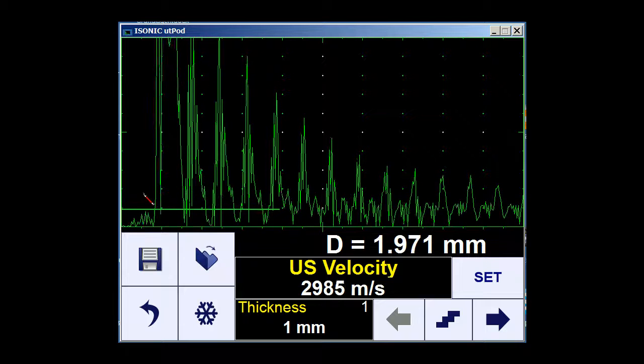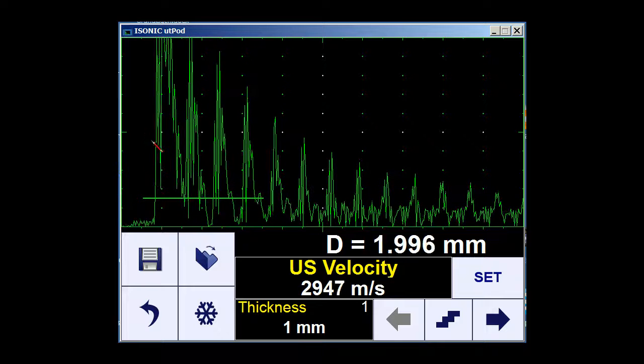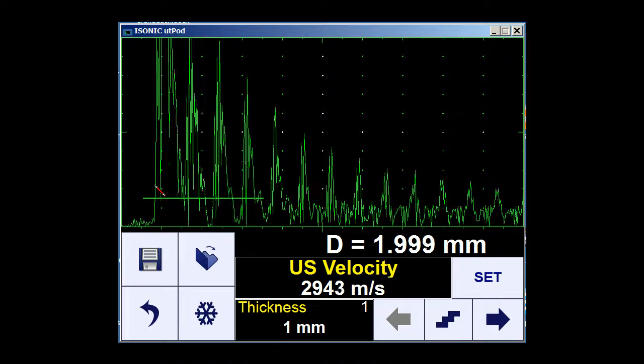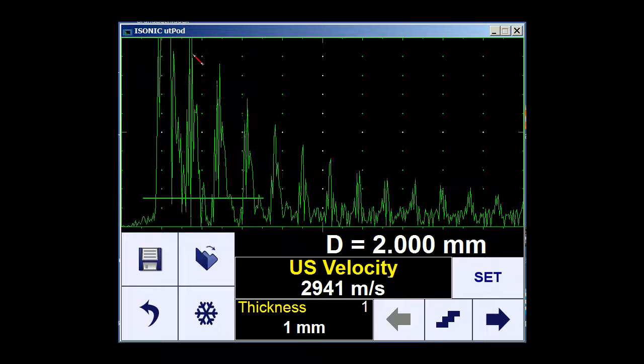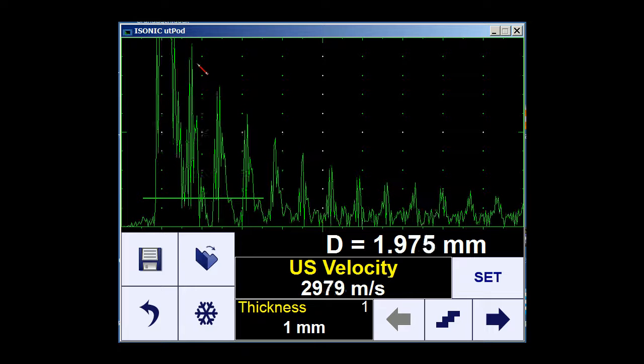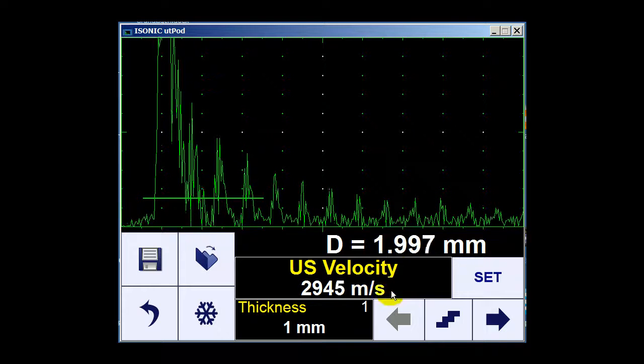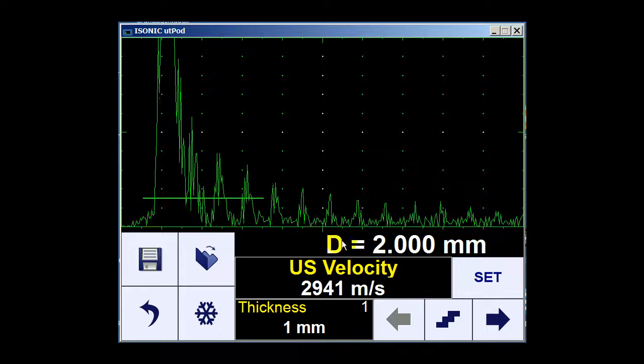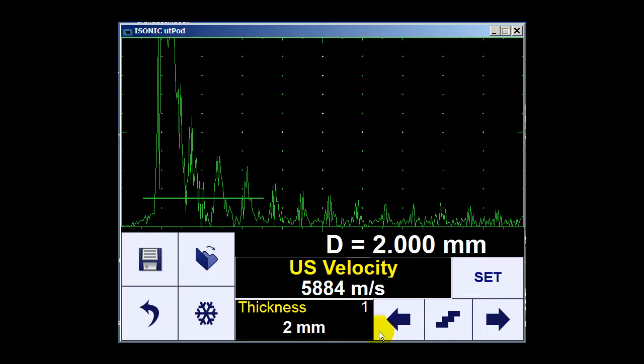I define my gate. The gate has to cover the delay line echo and at least one echo from the backwall of the test piece. Now it shows some sound velocity which is of course wrong and some thickness measurement. I am coupled on a 2mm block, so I have to select 2mm here.